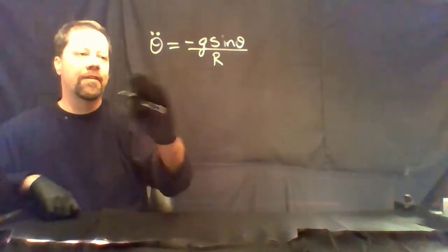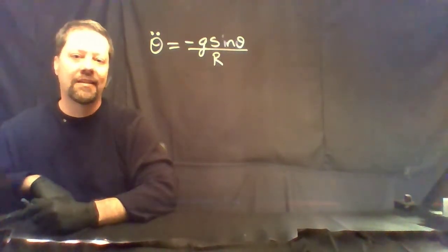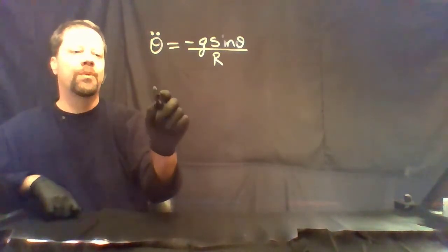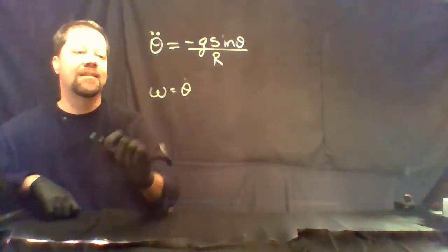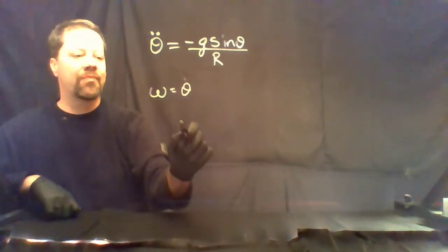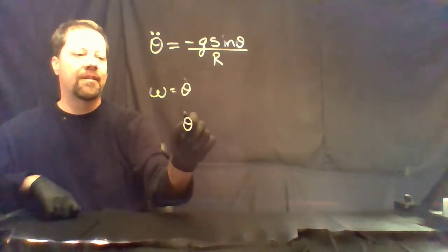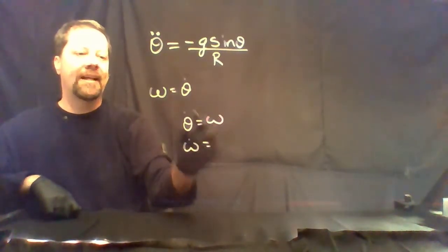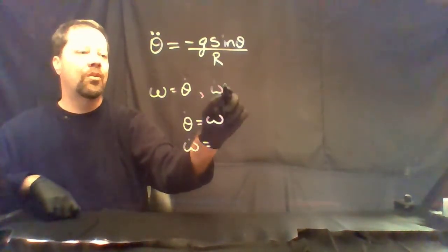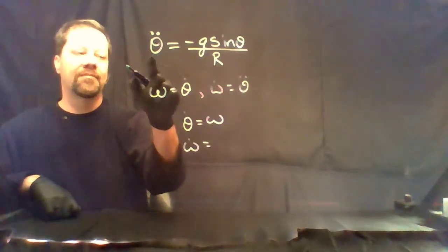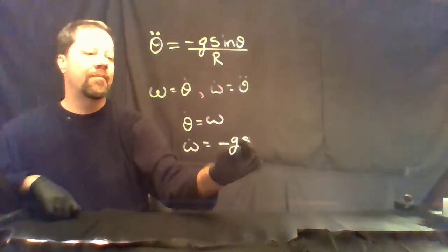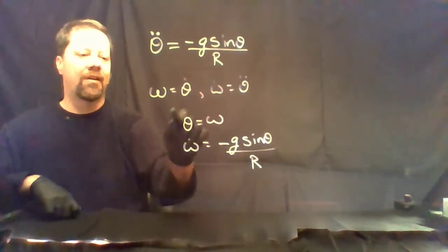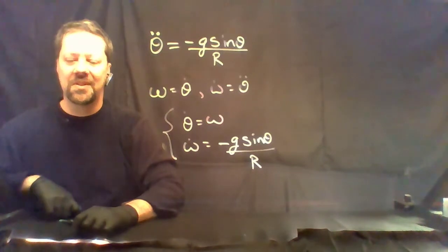We can convert this second-order nonlinear equation into a first-order nonlinear system. We set omega equal to theta-dot. In that case, we have the system: theta-dot equals omega, and omega-dot — notice that omega-dot is theta-dot-dot — equals -g sine theta divided by r. There's your first-order system.